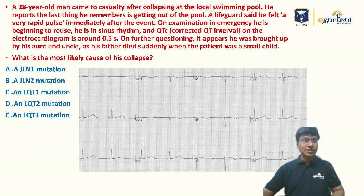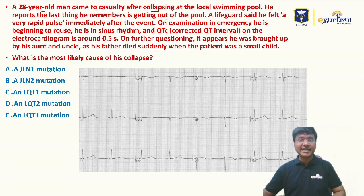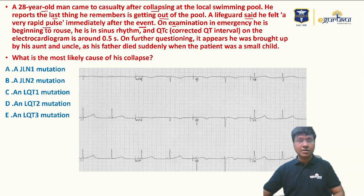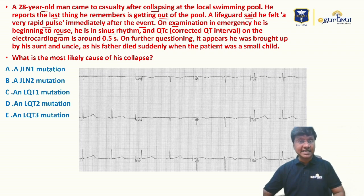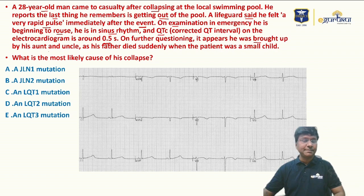The clinical scenario of the day: a 28-year-old man came to casualty after collapsing at a local swimming pool. He reports the last thing he remembers is getting out of the pool. The lifeguard noted a very rapid pulse immediately after the event. On examination in the emergency, he is beginning to rouse, is awake, and is in sinus rhythm. His corrected QT interval (QTc) on ECG is around 0.5 seconds.